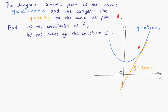By looking at the orange line, which is in the form y equals mx plus c, you can tell that the gradient is equal to 2.